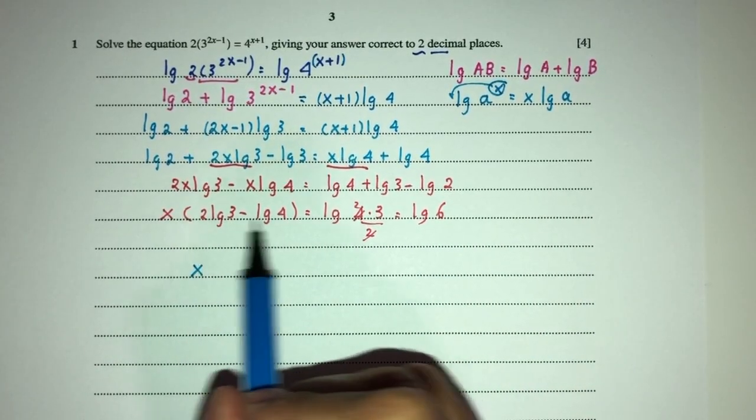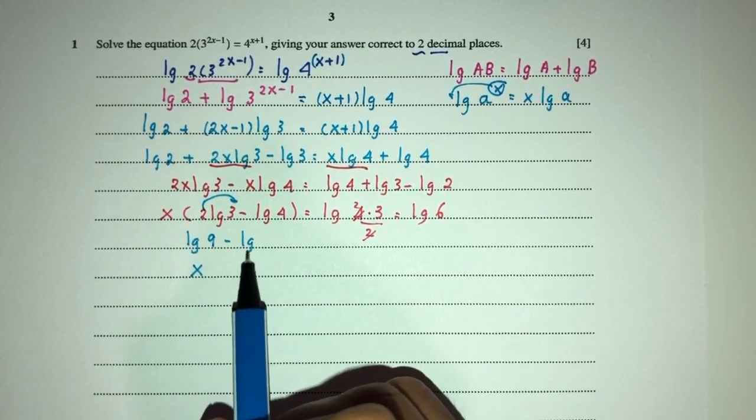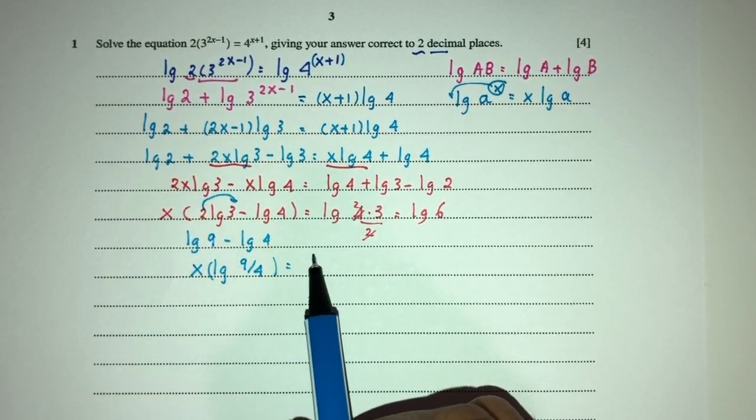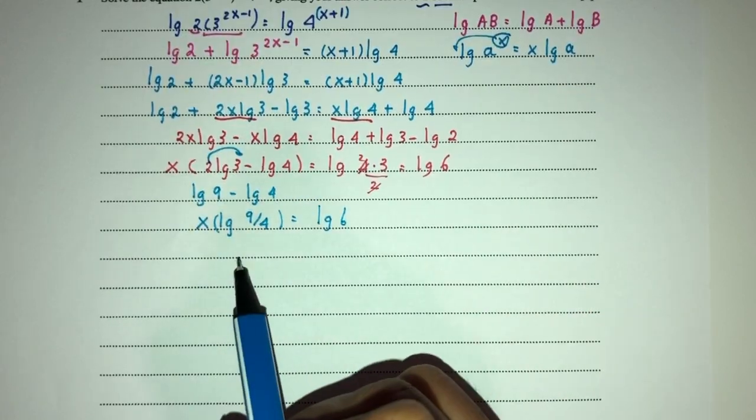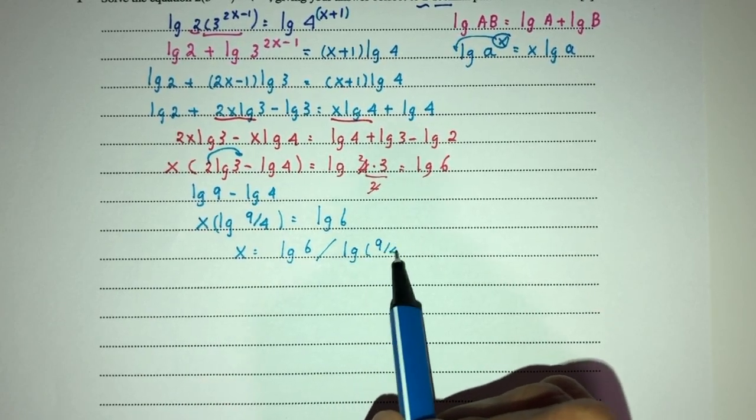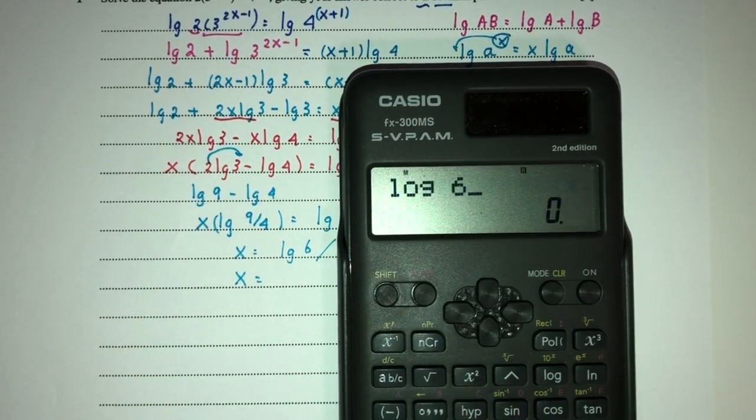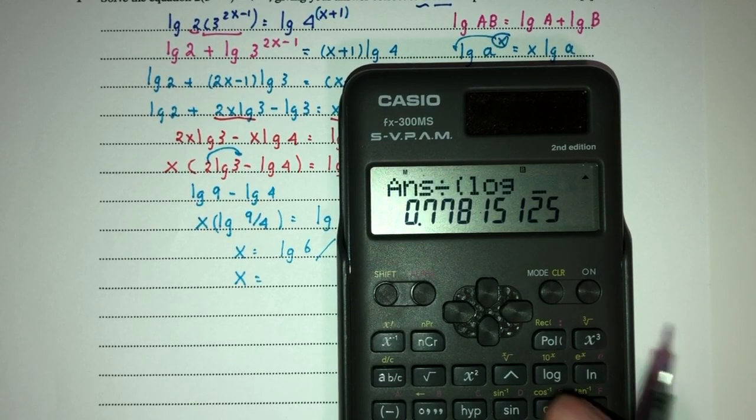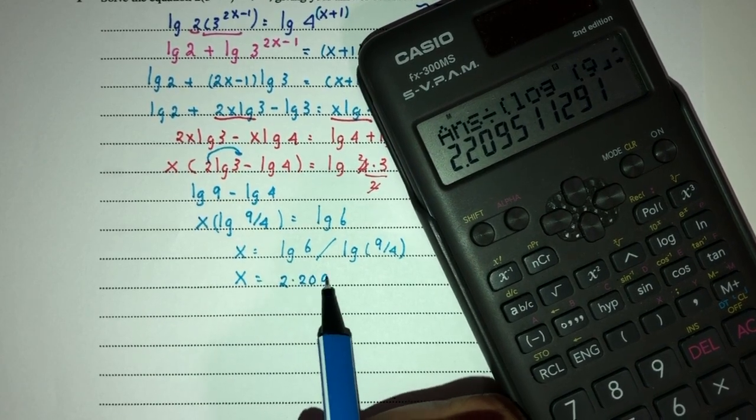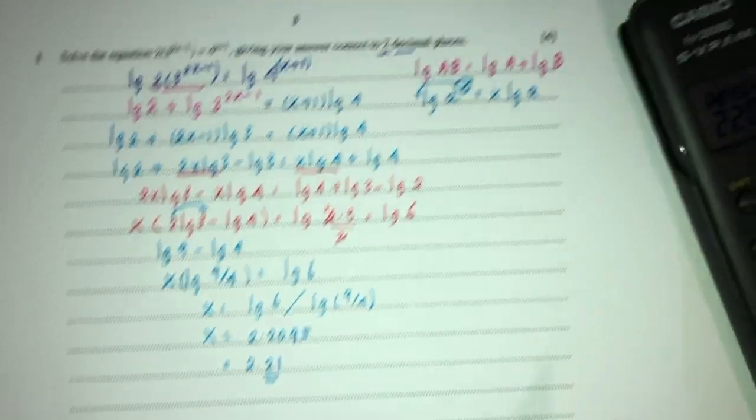So finally, x is the value of what? Again, you can simplify here if you want to. That would be, send this over here, you have log of 9 minus log of 4, which is log of 9 over 4. Is equal to log of 6. So therefore, x will be the value of log of 6 divided by log of 9 over 4. That would be 2.2095, but correct to 2 decimal places, 2.21. And this is your answer for question number 1.